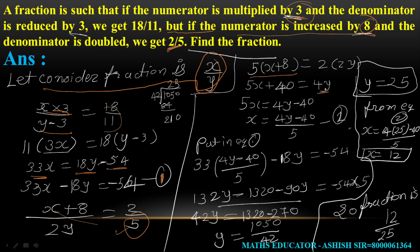Making x the subject: if it is plus 40 on one side, then it becomes minus 40 on the other; if it was multiplied, then it becomes division. So x equals (4y minus 40) divided by 5. This is Equation 2. Now put this into Equation 1.